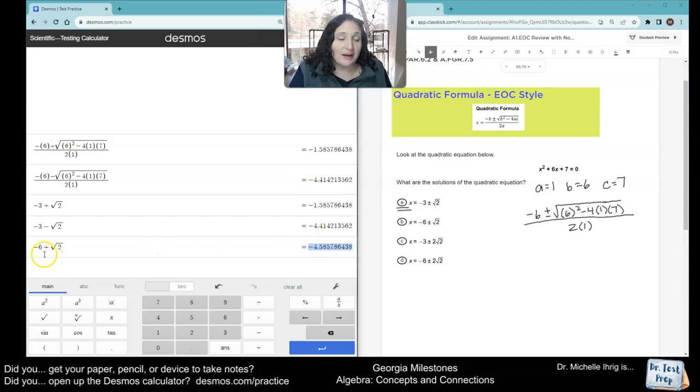If I had put in the negative 3 plus the two square roots of 2, it doesn't match the decimals. So we needed to match these two decimals because those are the decimals that match the quadratic formula.